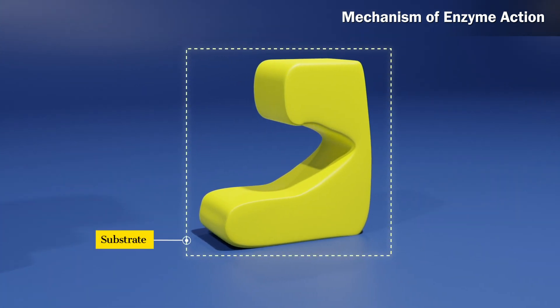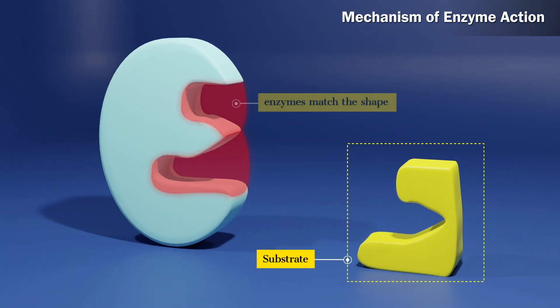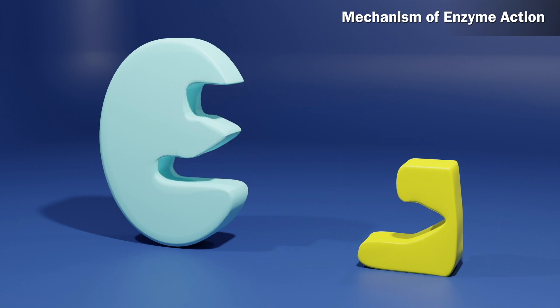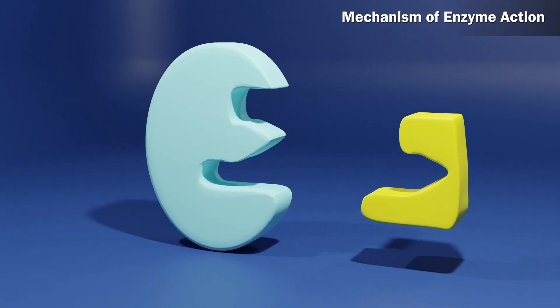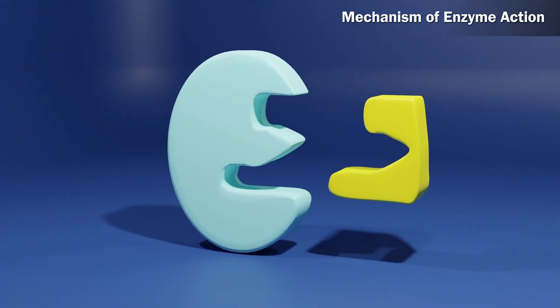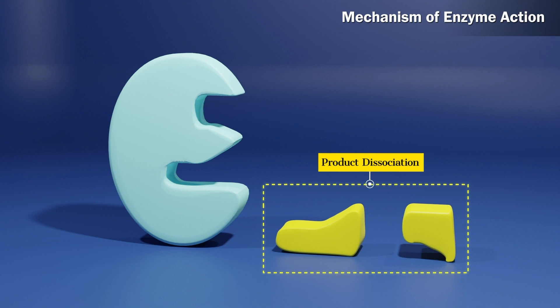The cavities of enzymes match the shape of the substrates. Due to the presence of active groups, an activated complex is formed which then decomposes to yield the products.